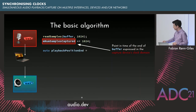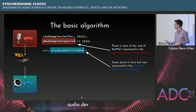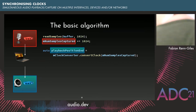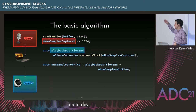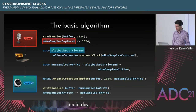I introduce a new variable pointing to the exact same point in time — when the current buffer capture ended — but in the playback device's clock domain, in units of the playback device's samples. To get that number I use a magic function called convert_clock, which converts between the capture device's clock domain and the playback device's clock domain. The algorithm is simple: calculate the number of samples to write by subtracting samples already written; expand and compress those 1024 captured samples to the needed count; write out to the playback device; increment the samples-written counter. That's the basic audio synchronization algorithm.